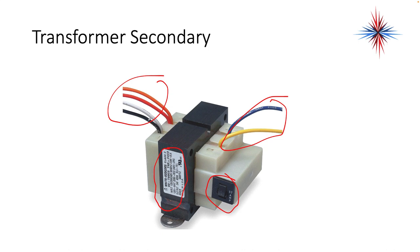In this case, we know that our black is going to be our common, white is going to be my 120, red is my 208, and orange is 240 — you can just see it in the label there. So it gives you an ability to use multiple voltages on a single unit, which is great to have in your service truck when you need to carry one part to serve multiple purposes.